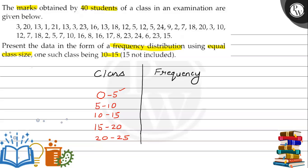So here from 0 to 4 we will have 6 values, from 5 to 9 we will have 10 values, from 10 to 14 we will have 8 values, from 15 to 19 we will have 8 values, and from 20 to 24 we will have 8 values.